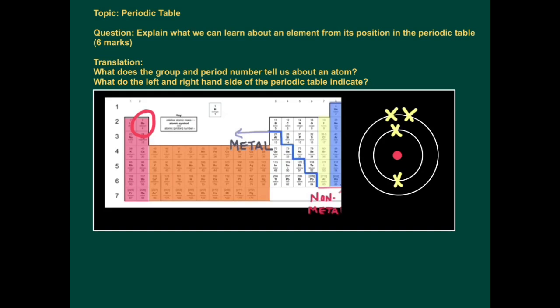There's loads of information we get from the periodic table. What does it tell us? What does the group and period number tell us about an atom? And what do the left and right hand side of the periodic table indicate?